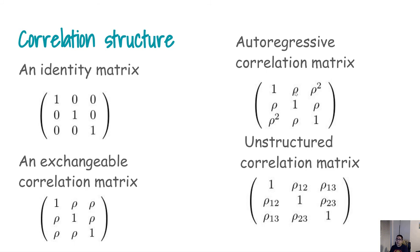A more realistic structure is one where if you compare your outcome from month two to month three you will have a larger correlation, but if you compare month two to month eight there may be less correlation. The correlation coefficient is a value between zero and one, and if you take its square the value goes down — meaning the further apart the observations, the lower the correlation between them.